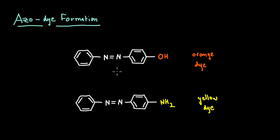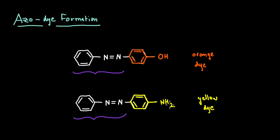Let's look at how they are formed. This may look a little complicated, but we can get a feel for how these are formed if we just break them down. This orange ring along with the OH is essentially phenol. And similarly, this yellow ring along with the NH2 is aniline. This part is common to both of the dyes, so the formation of this dye is probably a reaction between whatever this is with phenol or with aniline.